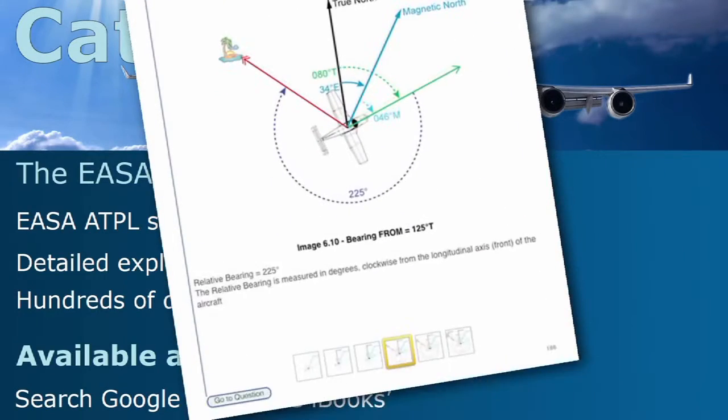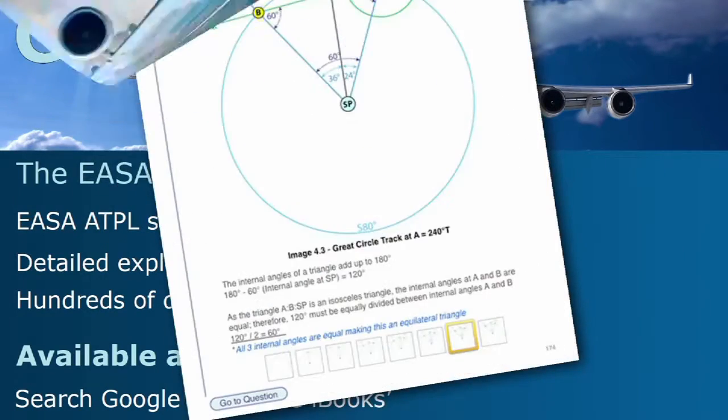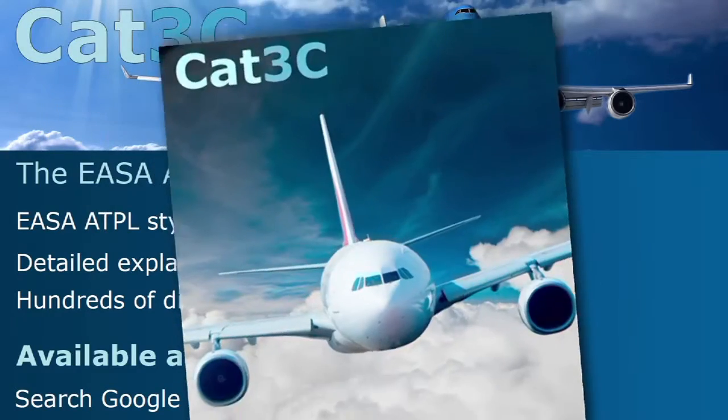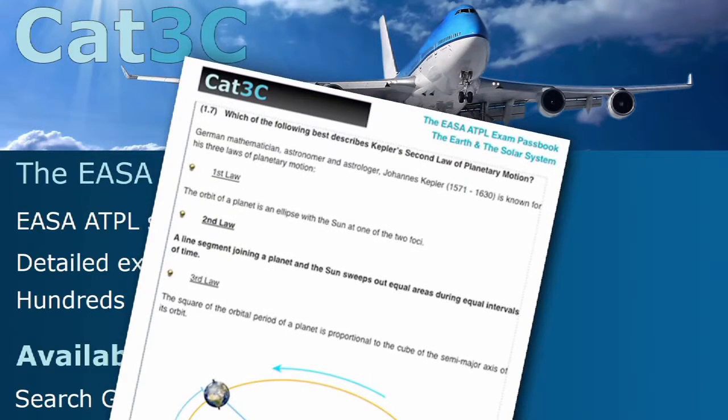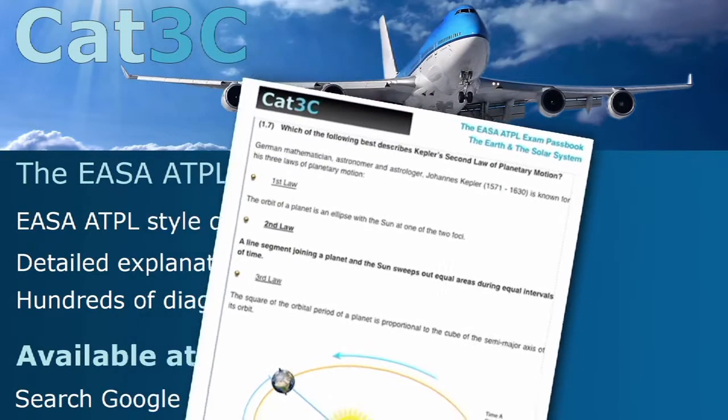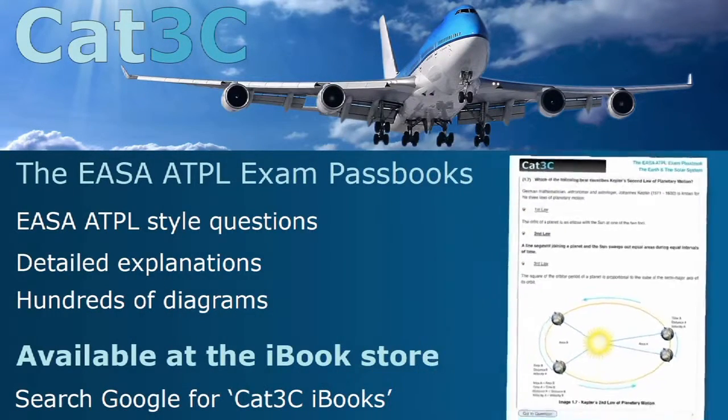The passbooks contain hundreds of exam style questions and are supported by clear in-depth explanations and interactive diagrams. The link to the iBooks can be found on the webpage below or at the Cat3C website at the bookstore tab.